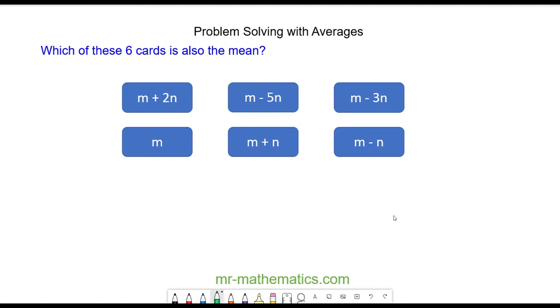In this question, one of the six cards is the average of all of them. And remember, the mean average is the sum of the data divided by the sample size.